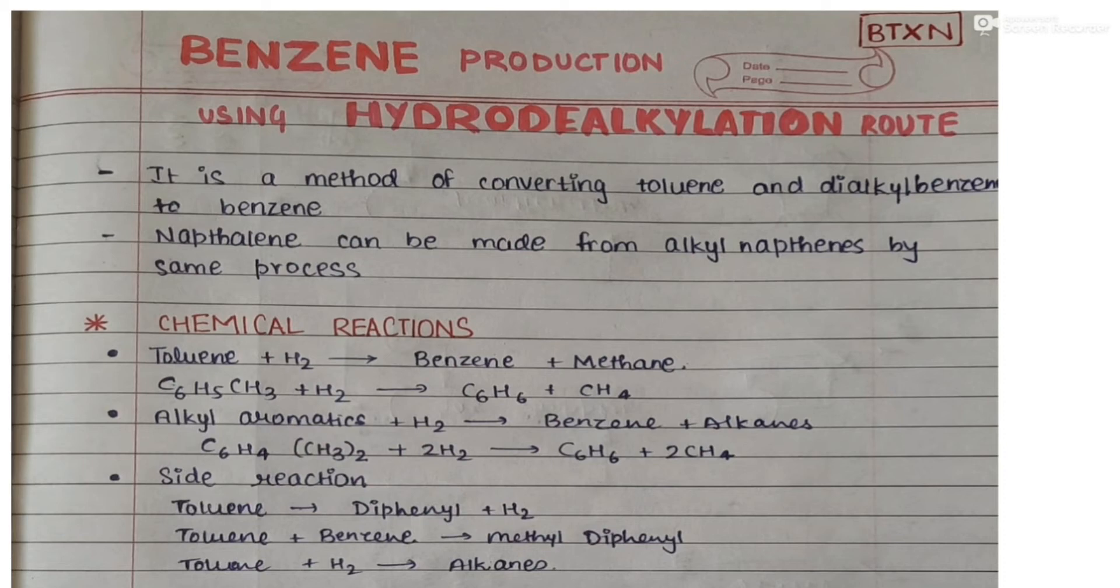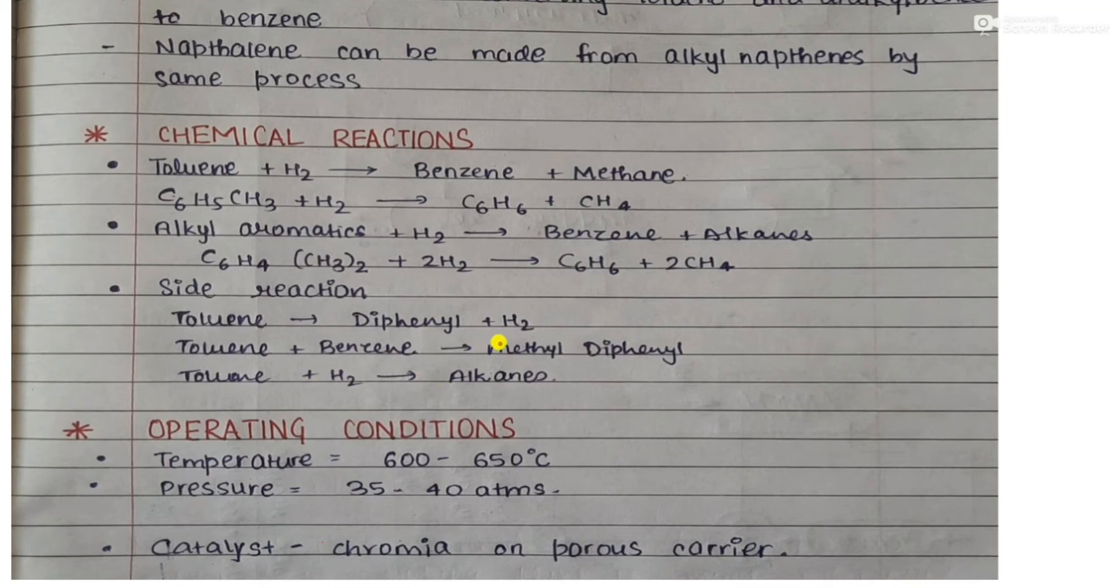The side reactions are: toluene gives diphenyl plus hydrogen, toluene plus benzene gives methyl diphenyl, and toluene plus hydrogen gives alkanes.